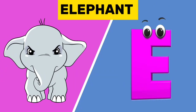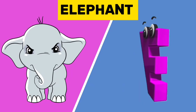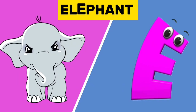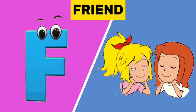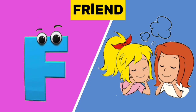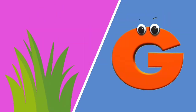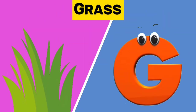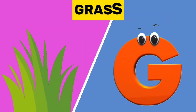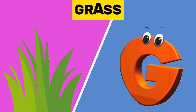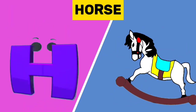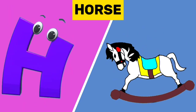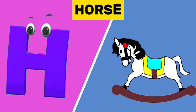E is for elephant. E, e, elephant. F is for friend. F, f, friend. G is for grass. G, g, grass. H is for horse. H, h, horse.